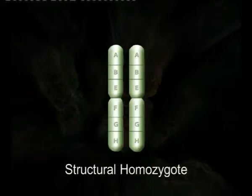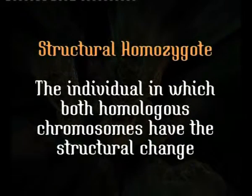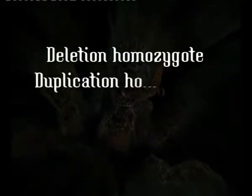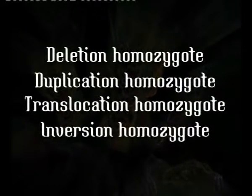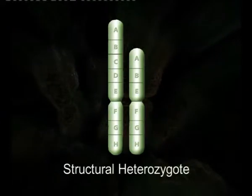A structural homozygote is an individual in which both homologous chromosomes of a pair carry the structural change — whether it is a deletion, duplication, translocation, or inversion — and it is called accordingly: deletion homozygote, duplication homozygote, translocation homozygote, or inversion homozygote. On the other hand, if only one of the two homologous chromosomes carries the structural change while the other is normal, that individual is known as a structural heterozygote.